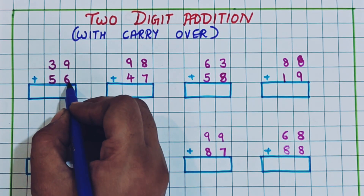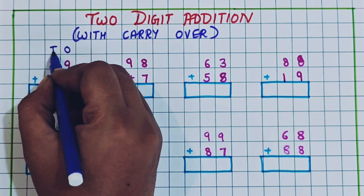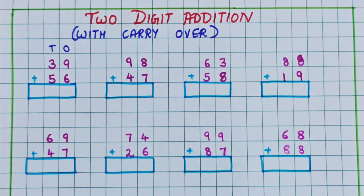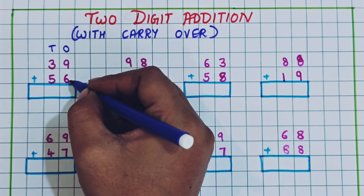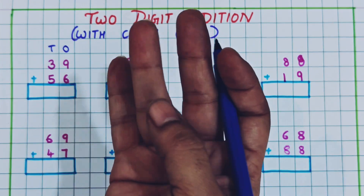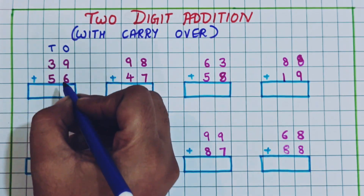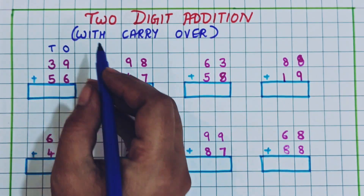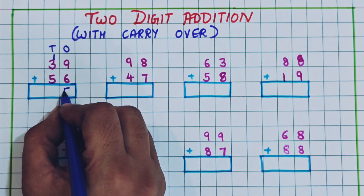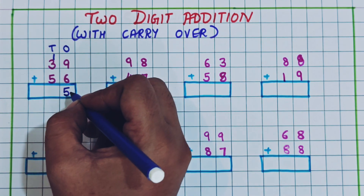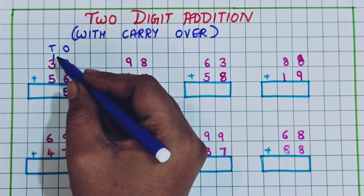39 plus 56. Now here we are going to start from the ones place. Always the addition is going to start from the ones place. So 9 plus 6: 10, 11, 12, 13, 14, 15. So 15 is a two-digit number, so 1 I will write in the tens place and 5 I will write here in the ones place. This 1 is the carryover.